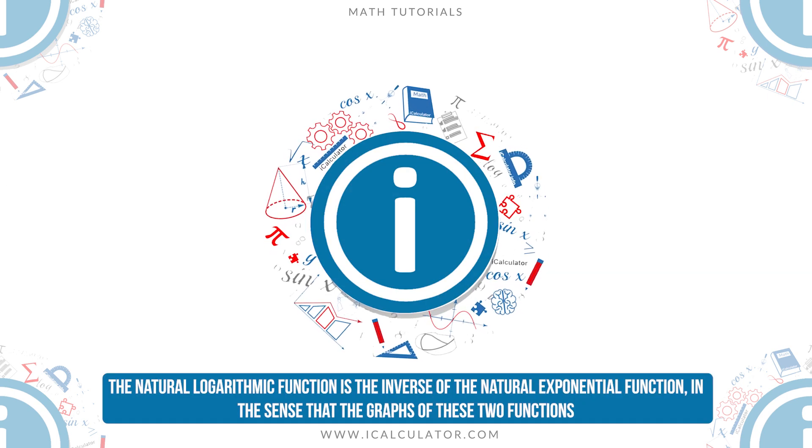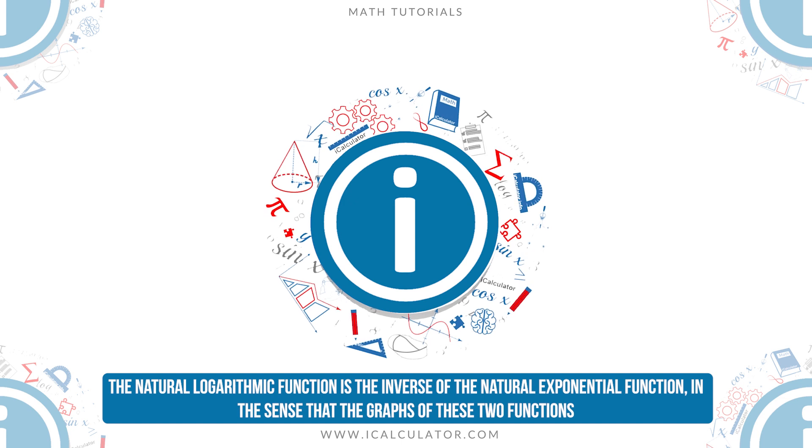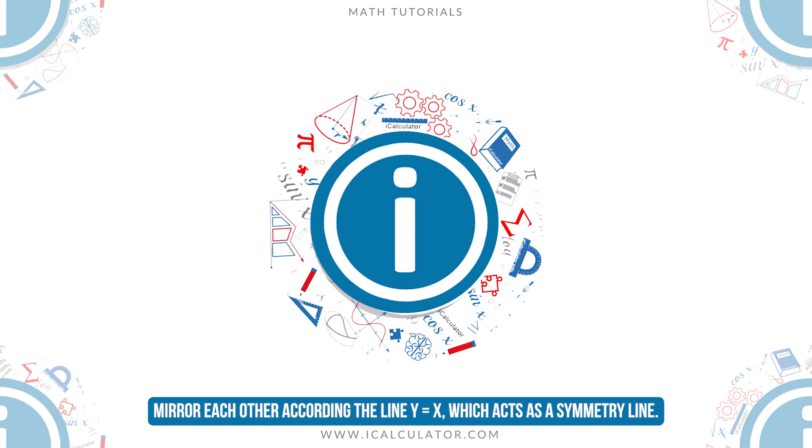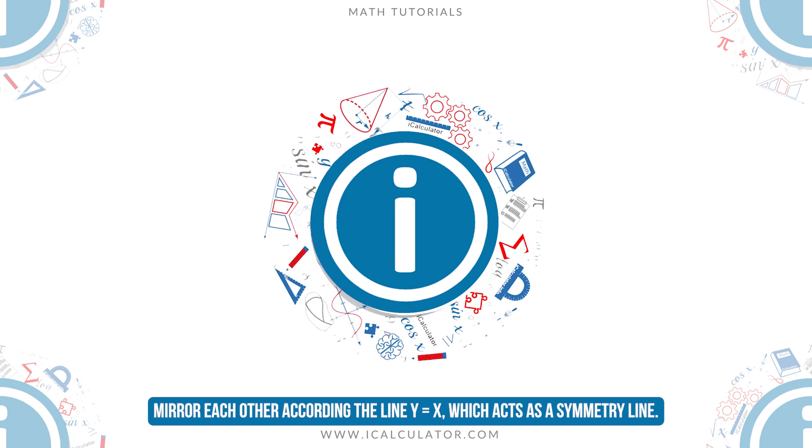The natural logarithmic function is the inverse of the natural exponential function, in the sense that the graphs of these two functions mirror each other according to the line y equals x, which acts as a symmetry line.